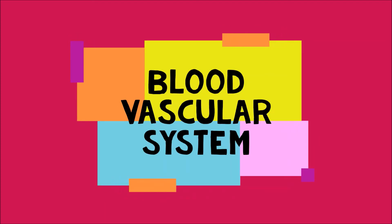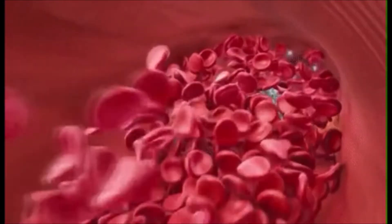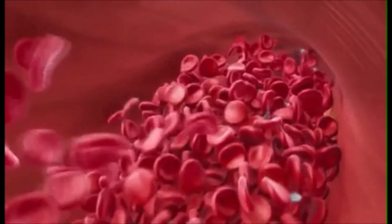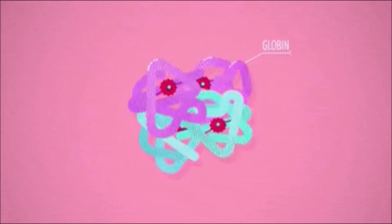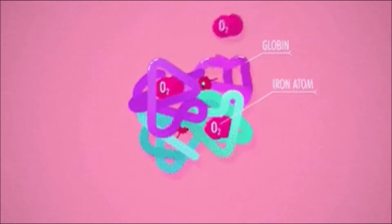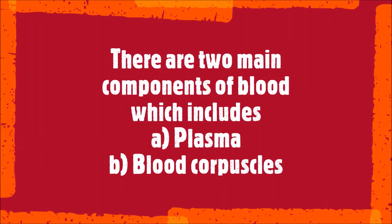A vascular system is a system of tubes filled with fluid that is to be transported from one place to another. The blood vascular system includes the heart and the blood. Blood is a fluid connective tissue which circulates in our body. It is red in color due to the presence of a red pigment called hemoglobin. There are two main components of blood: blood plasma and blood corpuscles.